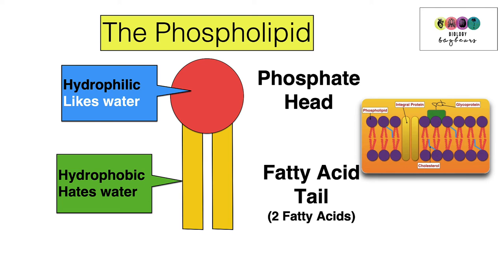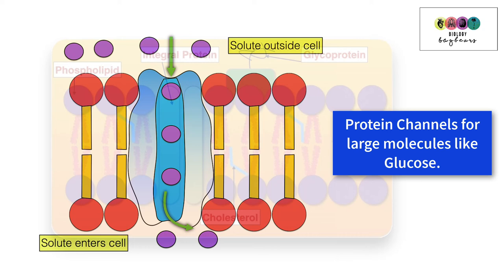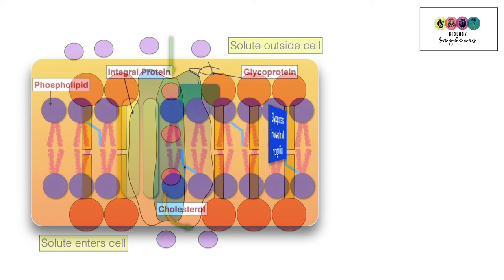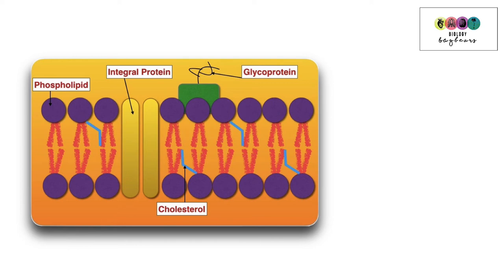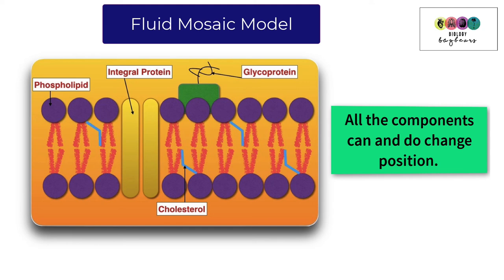Embedded in the phospholipid bilayer are special proteins known as integral proteins, through which large molecules — those too big to fit through the bilayer, such as glucose — can pass to enter and leave the cell. Materials like carbon dioxide, oxygen, and water can pass directly through the phospholipid bilayer. There are also glycoproteins involved in cell signalling or recognition. The model used to describe the structure of the cell membrane is the fluid mosaic model, where all components — phospholipids and proteins — can move about within the structure.